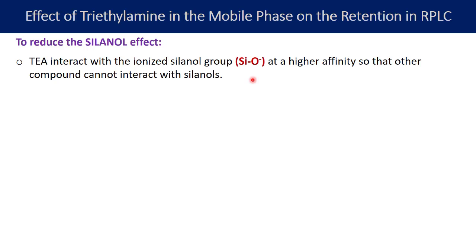What happens if you add triethylamine into the mobile phase? Triethylamine is also a base, and it will also get protonated — it becomes a quaternary amine carrying a positive charge. This quaternary amine has a higher affinity towards the silanol groups. Because of that, the weak basic compound will not get any chance to interact with the silanol groups. Rather, this protonated triethylamine will sit on the silanol groups, so that the secondary interaction of your protonated basic compounds gets reduced.